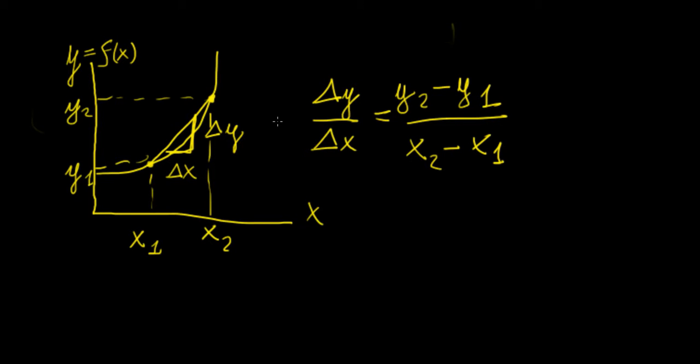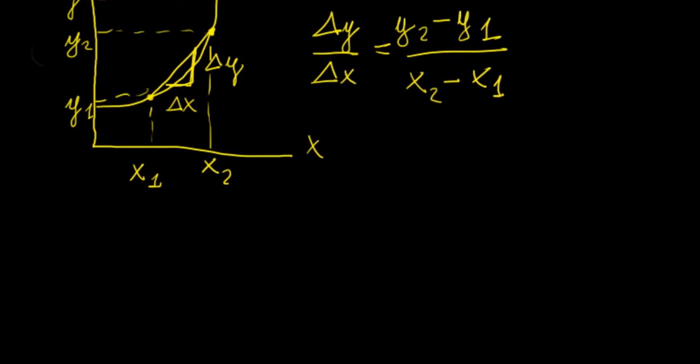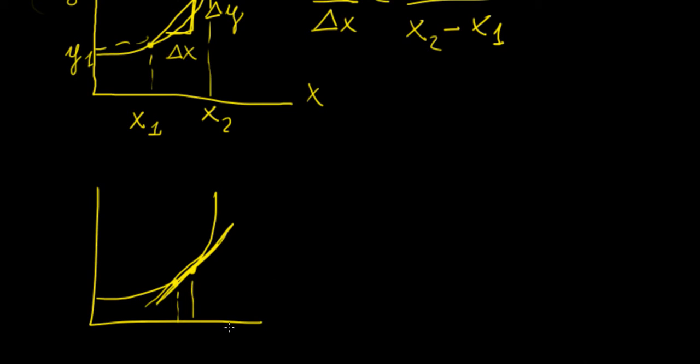Now what's going to happen when we shrink that area? Let's say that we're interested in finding the gradient of a line that passes through two points, but those two points are much closer together. So something like this, and the line goes like that. In that case, we're going to have x1 and x2 closer together, and then we're going to have y2 and y1 closer together as well.